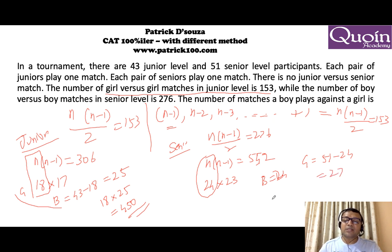So total matches played by boys and girls with each other will be 24 into 27. 24 square is 576, 24 trees are 72, you will get the answer is 648. So total matches by both of them put together will be 1098. Alright, I hope it is clear.